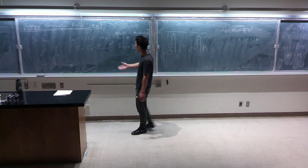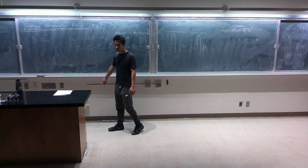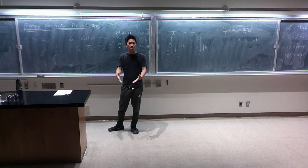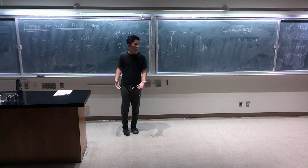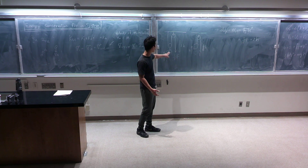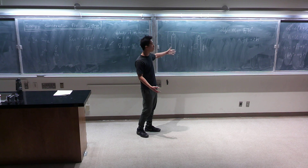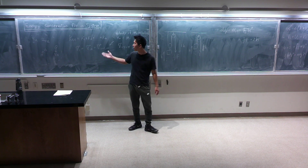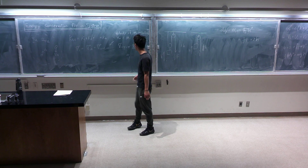We want the center of mass because it is easy to identify the center of mass of the system. When a block is moving, we know the center of mass is moving, but we might not know exactly what the individual particles inside the block are doing. So we want the center of mass velocity.